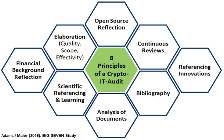Various authorities have created differing taxonomies to distinguish the various types of IT audits. Goodman and Lawless state that there are three specific systematic approaches: the technological innovation process audit, which constructs a risk profile for existing and new projects, assessing the company's experience in its chosen technologies, its presence in relevant markets, the organization of each project, and industry structure. The innovative comparison audit analyzes the innovative abilities of the company being audited in comparison to its competitors, examining research and development facilities and its track record in producing new products.